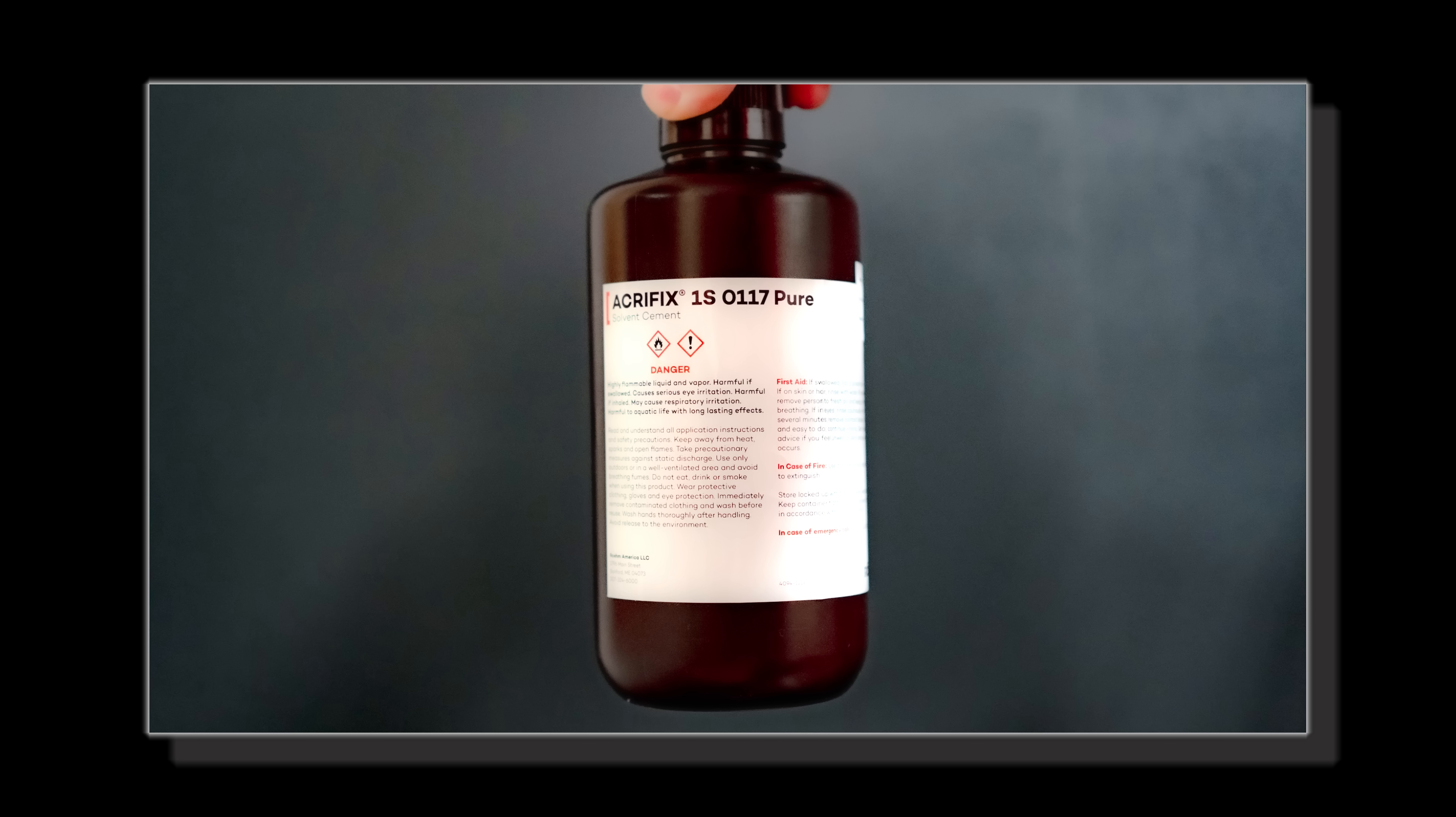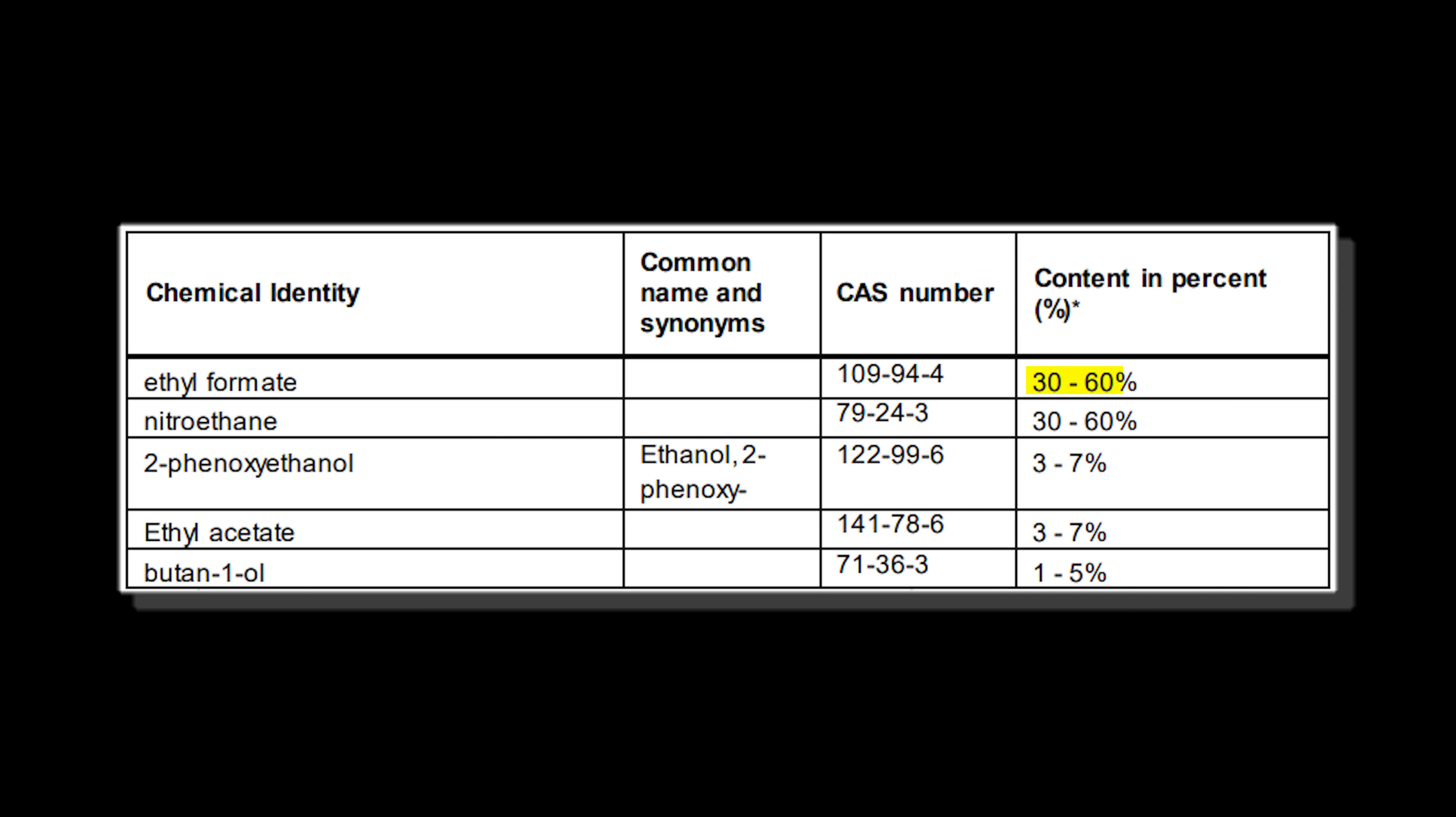To get the nitroethane, we could either do a synthesis or we could distill it from this product. Plastikraft has this product called Acryfix 1S0117 Pure that has nitroethane in it. It has ethyl formate with 30-60% and it has nitroethane with 30-60% as well.